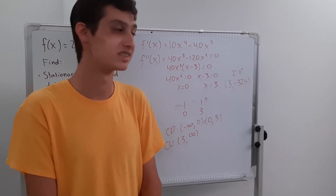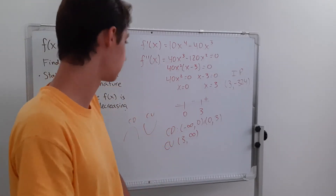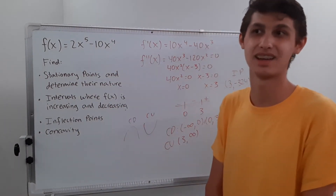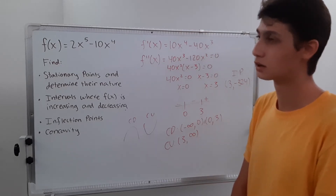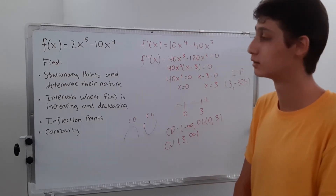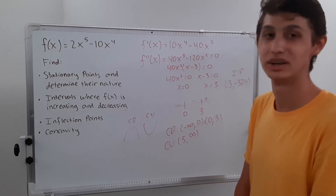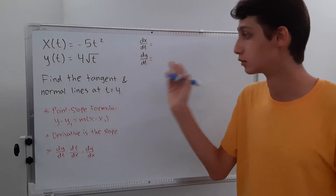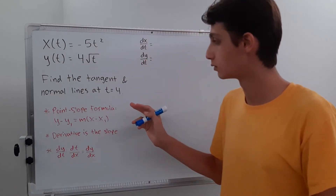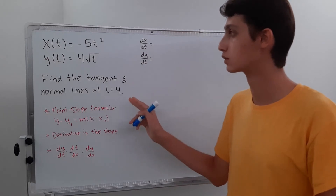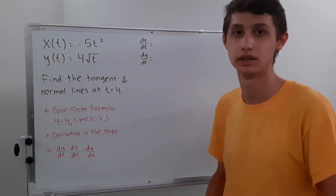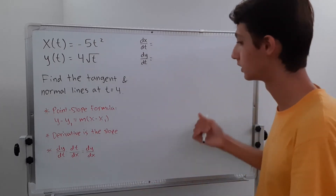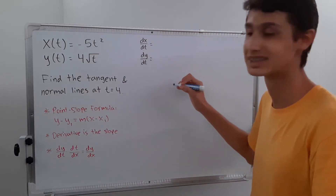That's pretty much the entire thing — we covered stationary points, increasing/decreasing intervals, inflection points, and concavity. It's probably a longer question than what you'll find on ACE exams, but be prepared. In this part we'll discuss tangent and normal lines, and we're going to find the tangent and normal line at t equals four of a set of parametric equations.